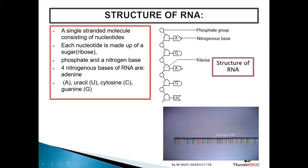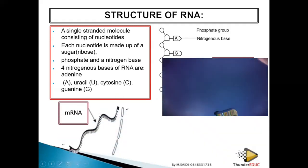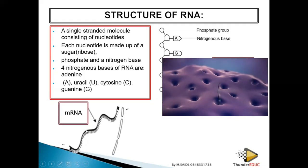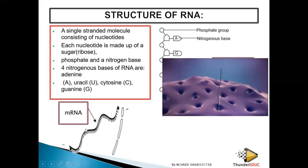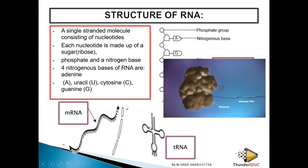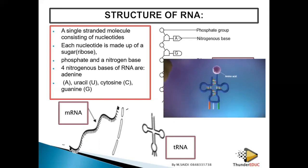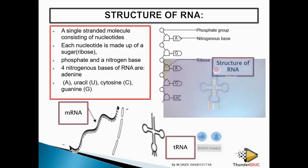This is the basic structure of RNA. This is how messenger RNA looks, and this is how transfer RNA looks. Ribosomal RNA just forms the ribosome, and at this level you don't need to know its detailed structure.